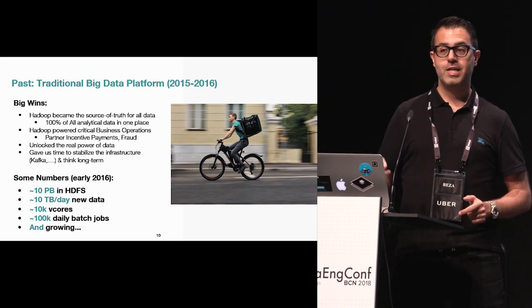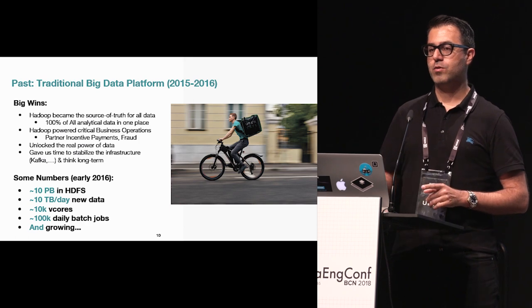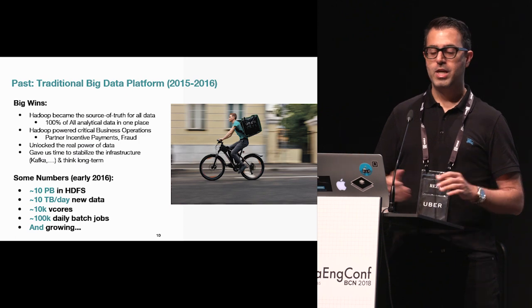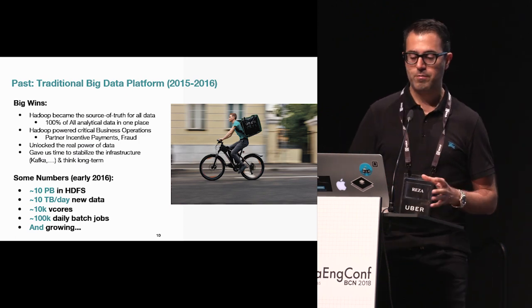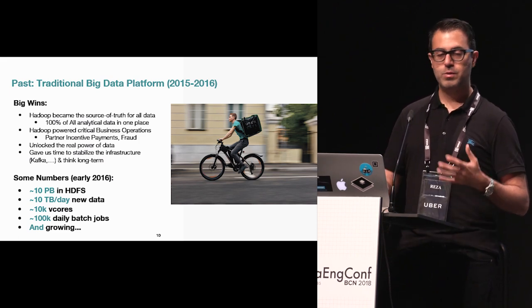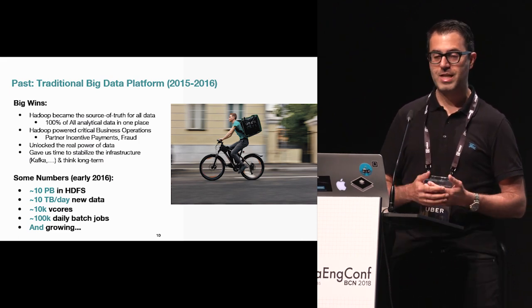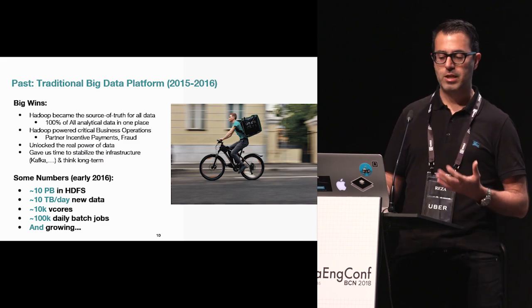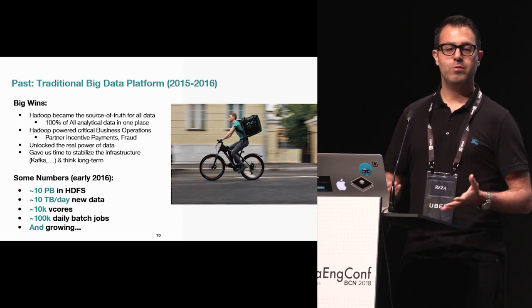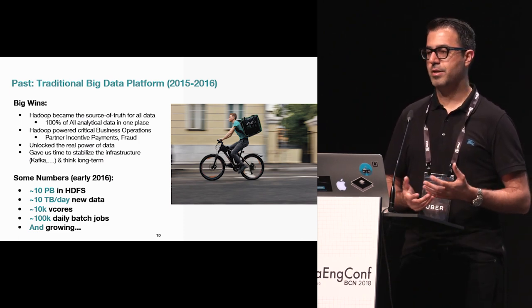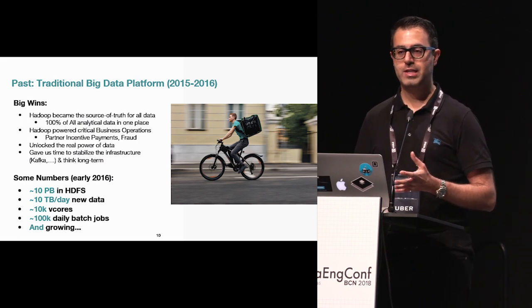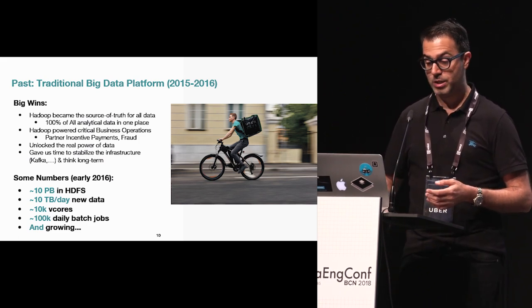To give some sense of the numbers: we were talking about a few tens of petabytes of data in HDFS, a few tens of terabytes per day of new data coming in, a Hadoop cluster of around 10,000 V-cores, and around 100,000 batch jobs running per day. But this was just the beginning — with more use cases and more data, the whole thing was still growing exponentially.